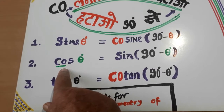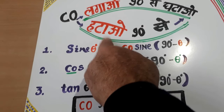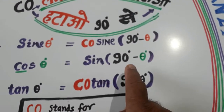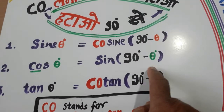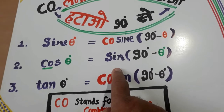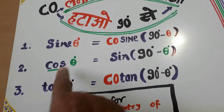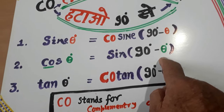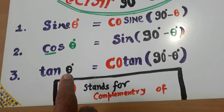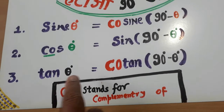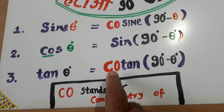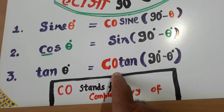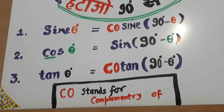Ko hatao, 90 mein se ghata do — ko hata diya, sine ban gaya, 90 mein se ghata do. Again, tangent theta: ko lagao, 90 mein se ghata do — ko tangent ban gaya; ko hatao, 90 mein se theta.